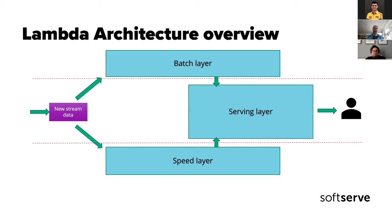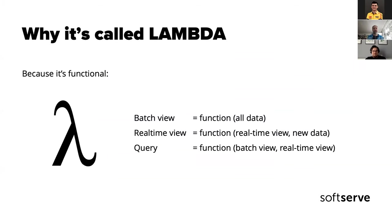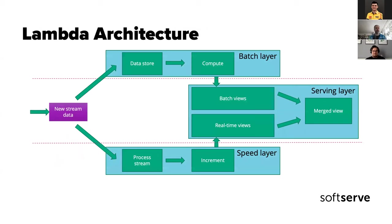Why is it called Lambda? It's because Lambda is a symbol borrowed from math and calculus, connecting to functional programming. The batch view is a function of all the data we have. The real-time view is a function of only new data and the real-time view gathered until now. Whatever the user queries is a function of both the batch view and real-time view — that's where the name Lambda Architecture comes from.